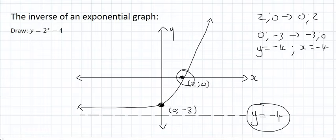So the first point we'll plot is 0, 2. Then it's minus 3 and 0. And then x equals to negative 4. And then we'll just plot the graph.